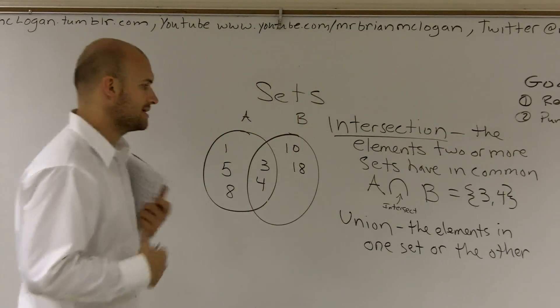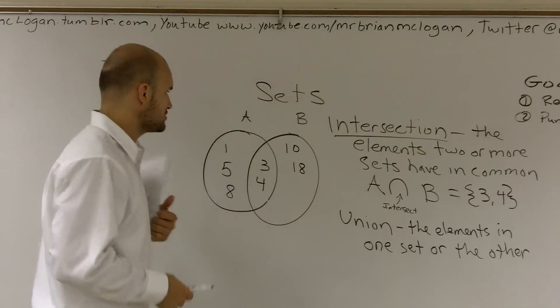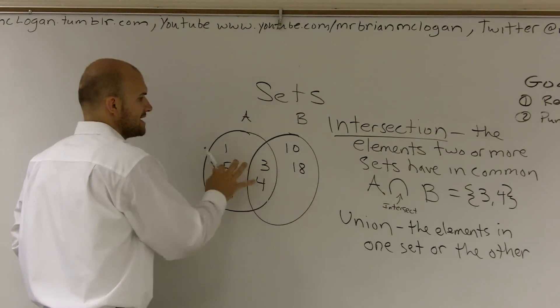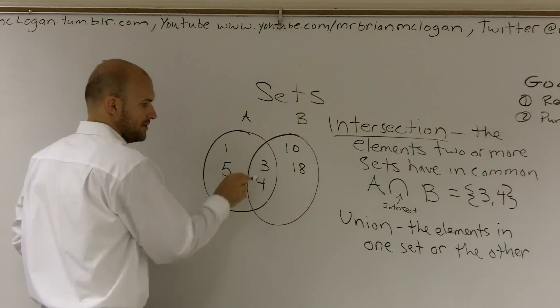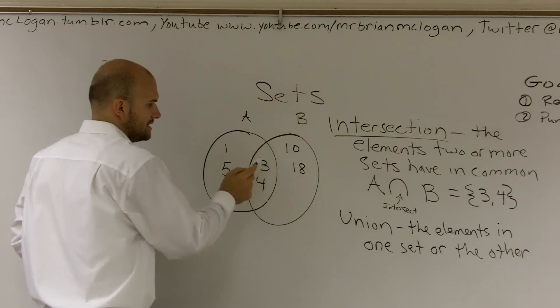And the one way we like to kind of look at union is kind of like, you can kind of think of this like combining all of them. So we say all the elements that are in set A is one, five, eight, three, and four. And all the elements that are in set B is ten, eighteen, three, and four.